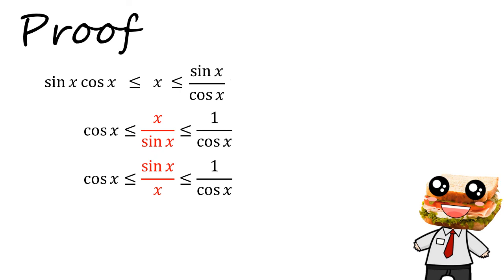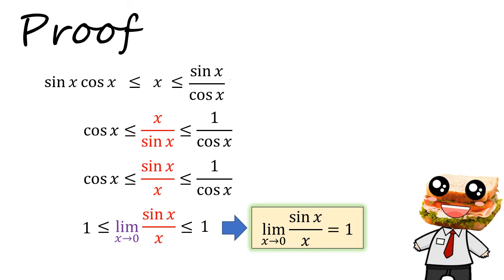Now we can start the squeezing process. Since sin x over x is trapped between by an upper bound of 1 over cosine and a lower bound of cosine x, let's take the limit of what would happen if x tends to 0. So the lower bound is going to become cosine of 0 and the upper bound will be 1 over cosine 0. But cosine 0 is just 1. So we can replace that with 1 on both sides. This means that as x tends to 0, sin x over x would tend to 1.